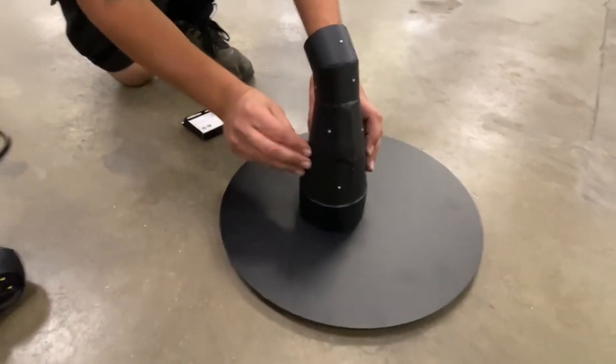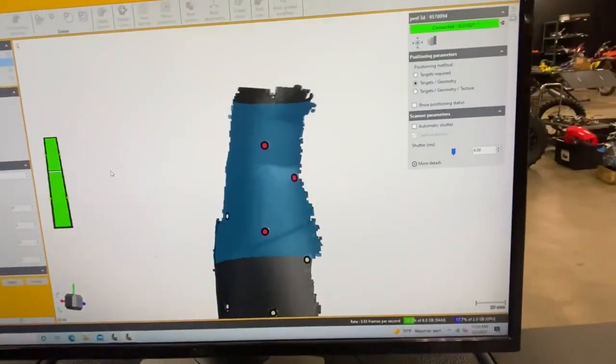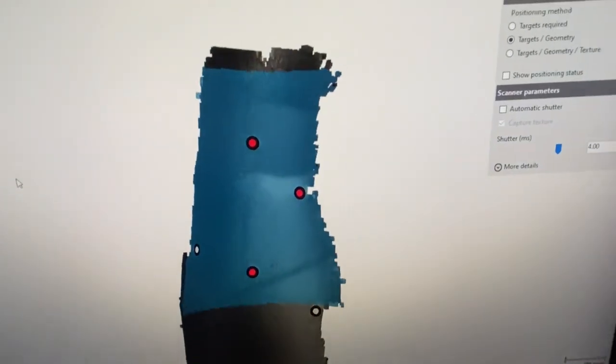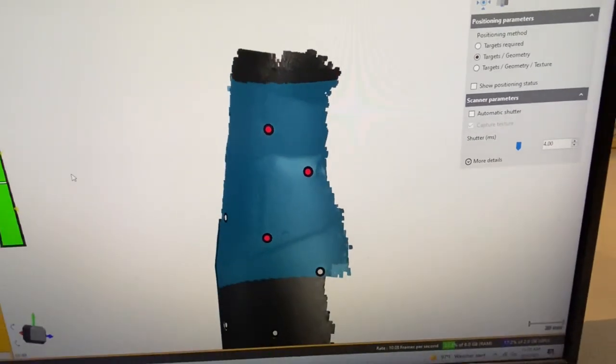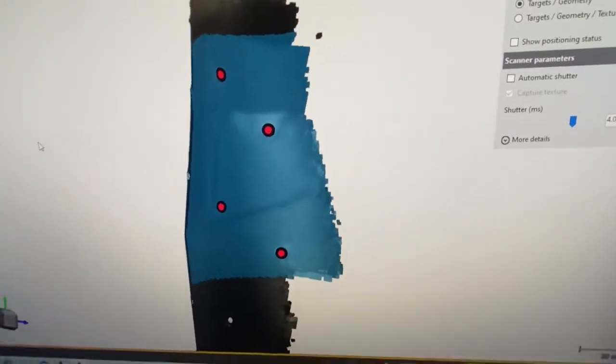Cute little turntable. Yep, figured it out, just go slow. You need dots and you gotta go super slow. See it building the image.